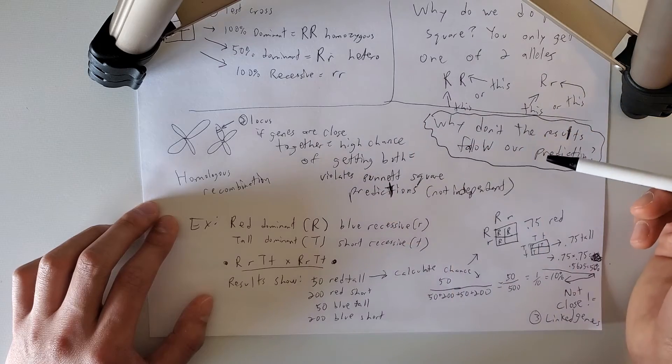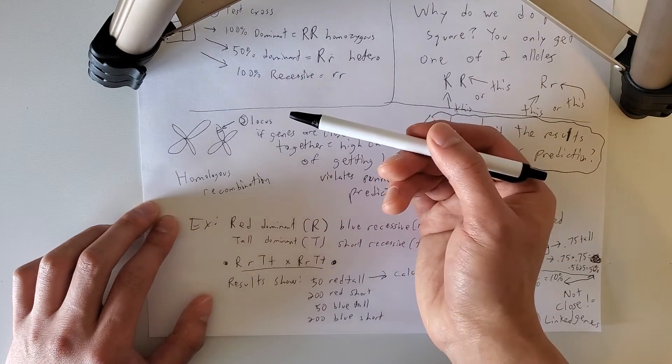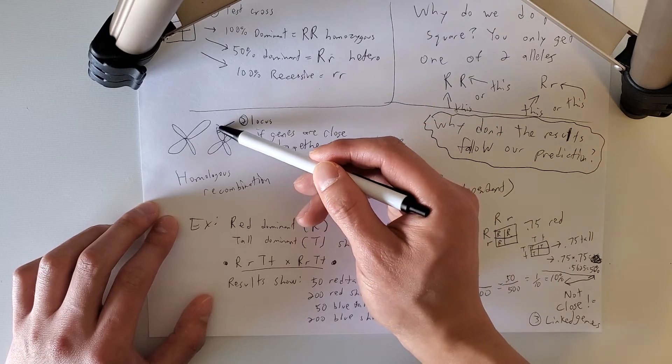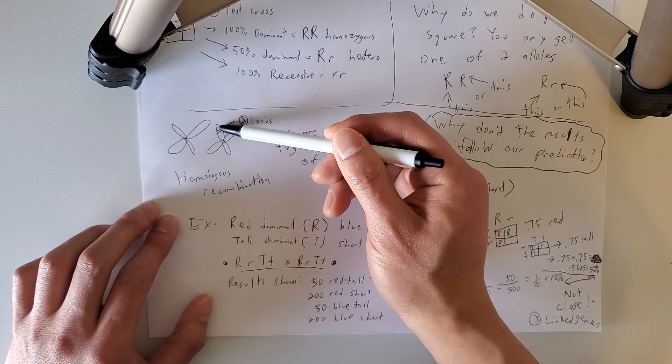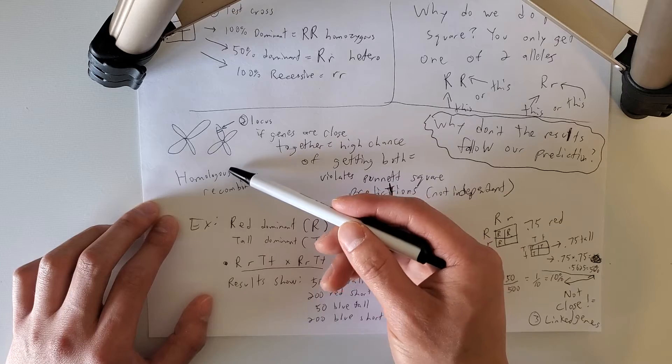In the Punnett square, we're assuming that each gene has an equal independent chance of being obtained. So it's random which gene you get, maybe you get this gene from one parent, maybe you get this gene. It's completely random. But that's actually not the case.